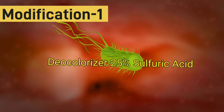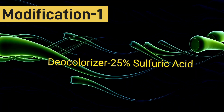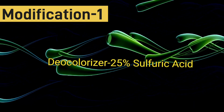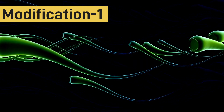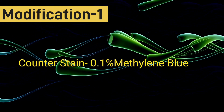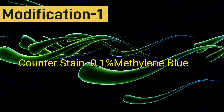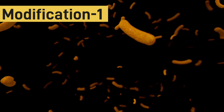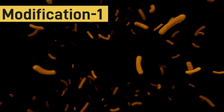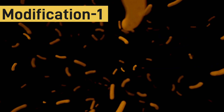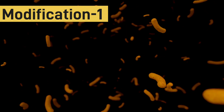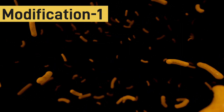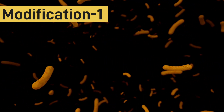The primary stain used here is a strong carbol-fuchsin at 1%. The decolorization step uses 25% sulfuric acid applied over the slide and allowed to act for two to four minutes. The counterstain is 0.1% methylene blue. In this Ziehl-Neelsen modification, Mycobacterium tuberculosis appears as long, slender, straight or slightly curved beaded red-colored acid-fast bacilli, while non-acid-fast bacilli and the background take up the counterstain and appear blue.